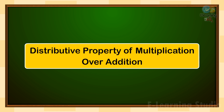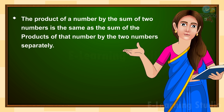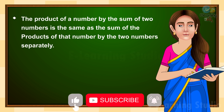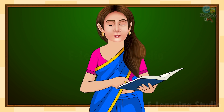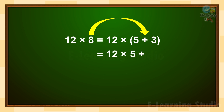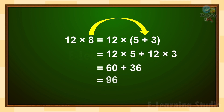Next property is distributive property of multiplication over addition. The product of a number by the sum of two numbers is the same as the sum of the products of that number by the two numbers separately. For example, 12 multiply 8, or we can write it as 12 multiply bracket open 5 plus 3 bracket close. So now, 12 multiply 5, plus 12 multiply 3, equals 60 plus 36, is equal to 96.